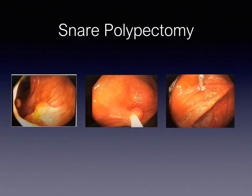These images demonstrate a snare polypectomy. On the left is a larger polyp. The snare device is inserted and tightened around the base of the polyp and heat energy or cautery is used for polyp removal. Finally, a hemostatic clip is applied. If you closely look at the tissue around the base of the hemostatic clip, you will see white tissue. This is the cauterized tissue from the heat or thermal energy.